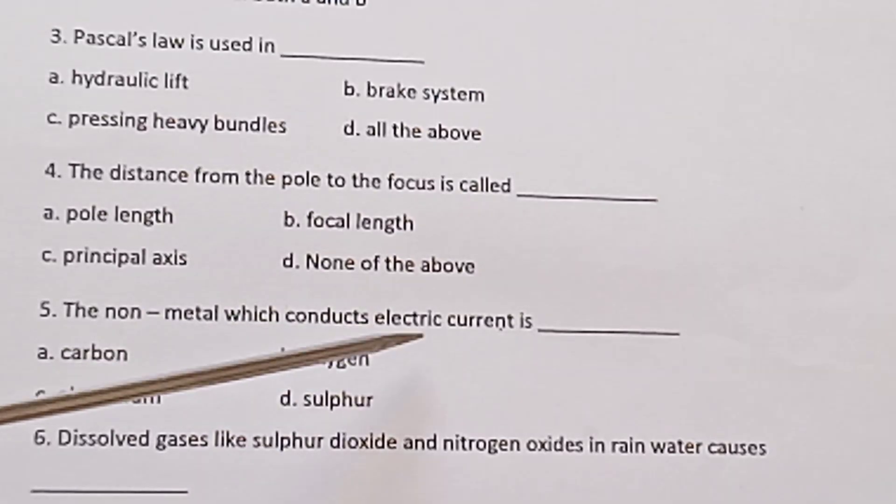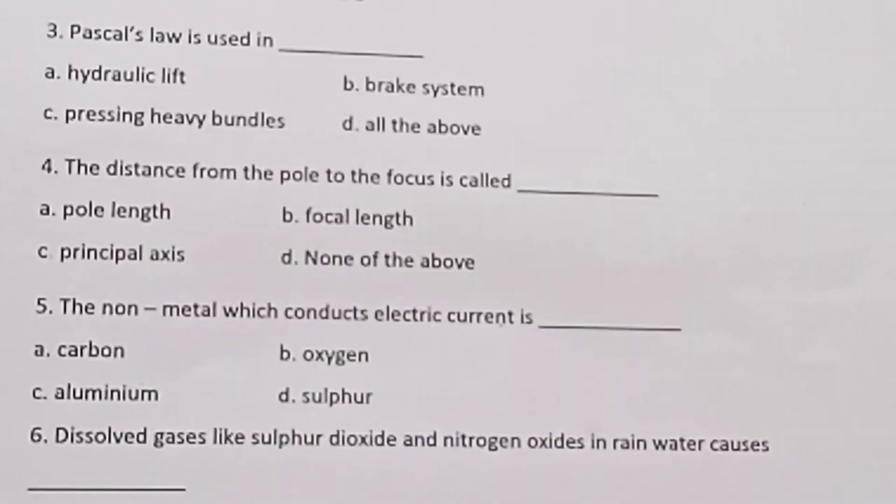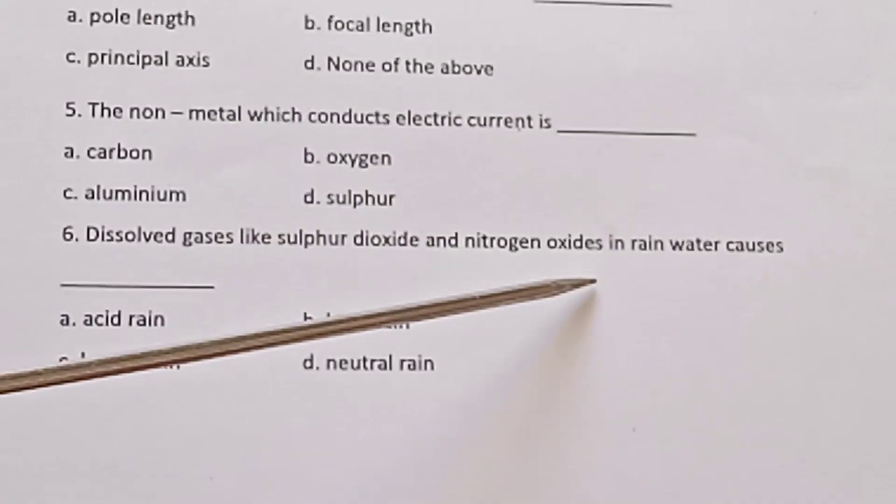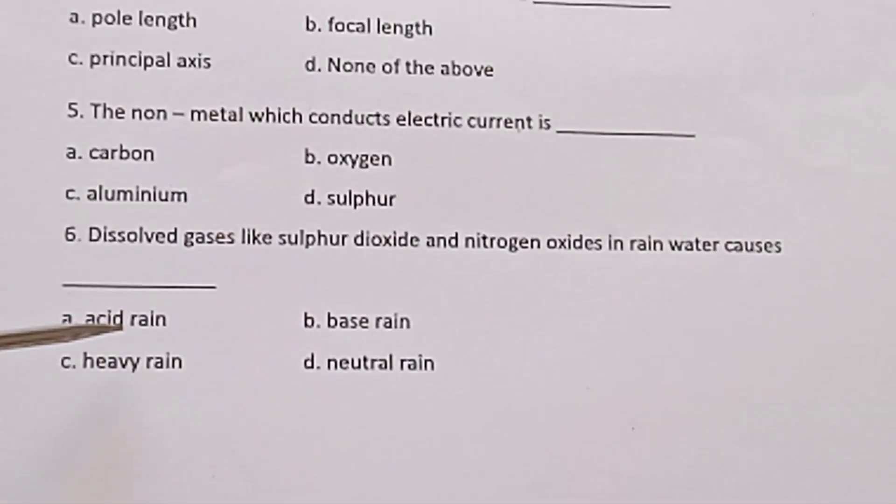The non-metal which conducts electric current is dash: carbon, oxygen, aluminum, sulfur. Dissolved gases like sulfur dioxide and nitrogen oxide in rainwater causes dash: acid rain, base rain, heavy rain, neutral rain.